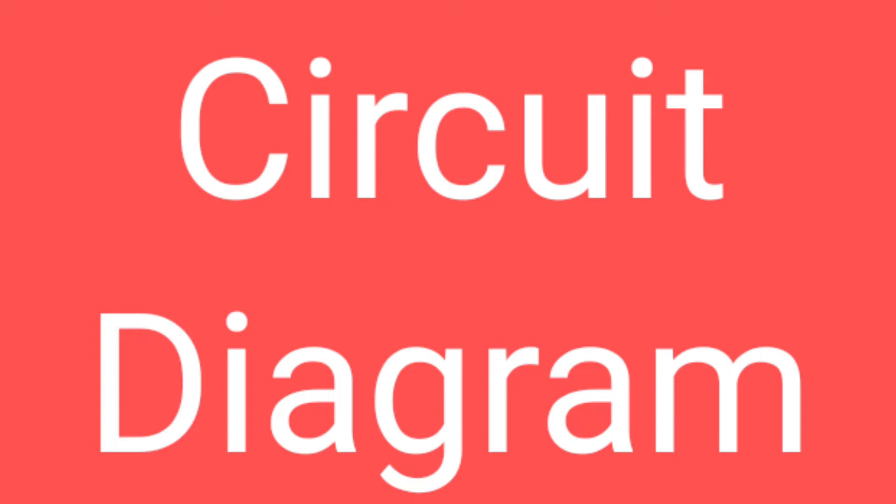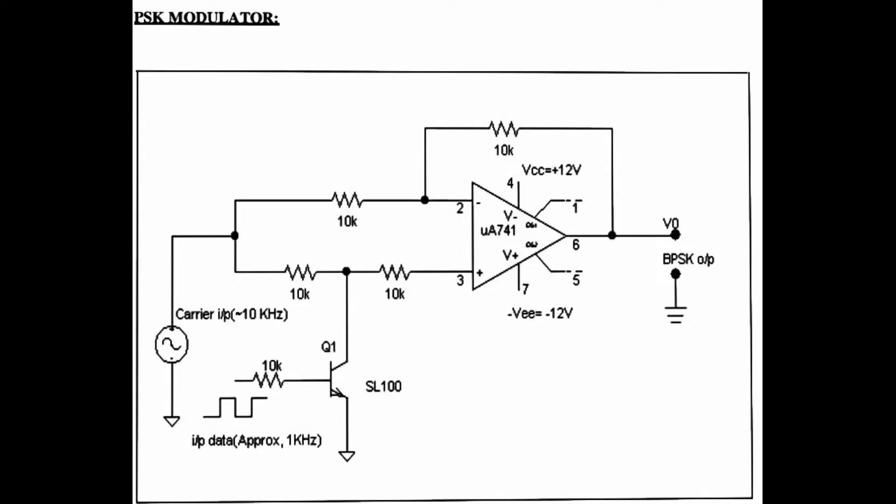So, this is the circuit diagram which is explained here. There is a circuit with an op-amp which generates sine and cosine, and it is modulated. And finally, we will get, according to the data input, a phase reversal at the output.